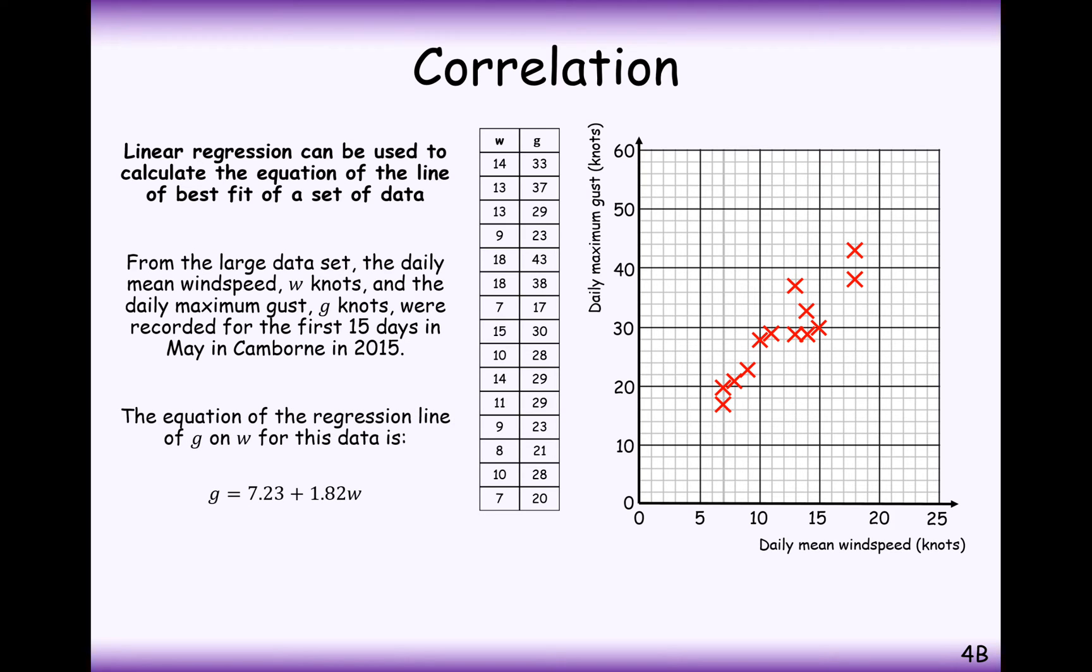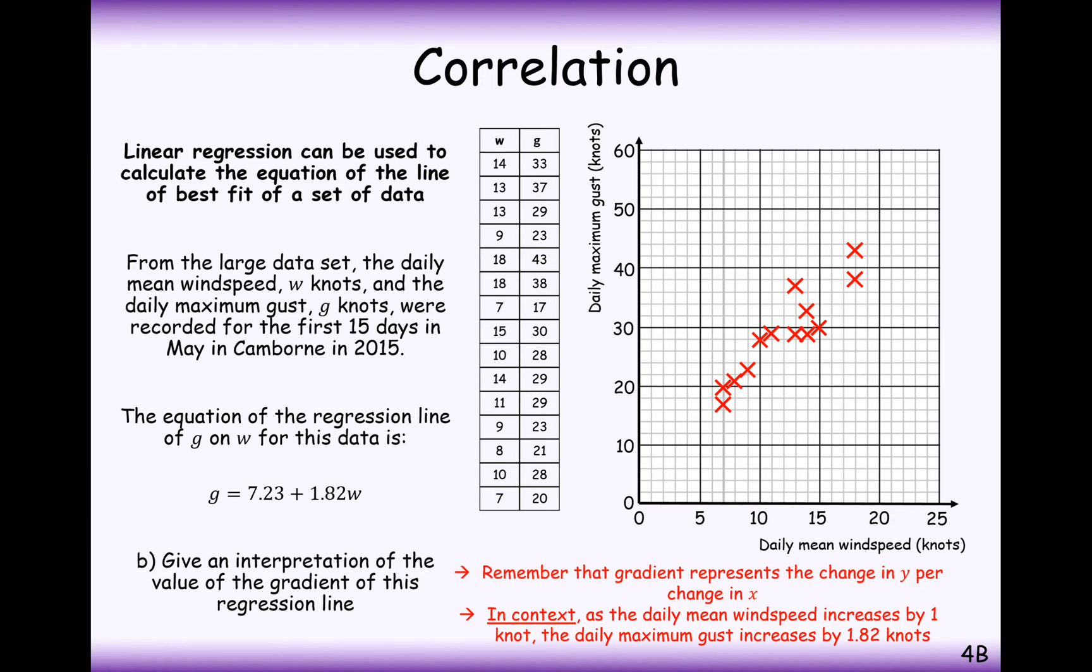The line of best fit gives G = 7.23 + 1.8W. Give an interpretation of what these two values mean for the regression lines. This is a classic A-level type question. The gradient that's going to be the value that's in front of W represents the change in Y per change in X. In context, if the daily mean wind speed increases by 1 knot, the daily maximum wind gusts will increase by 1.82 knots.